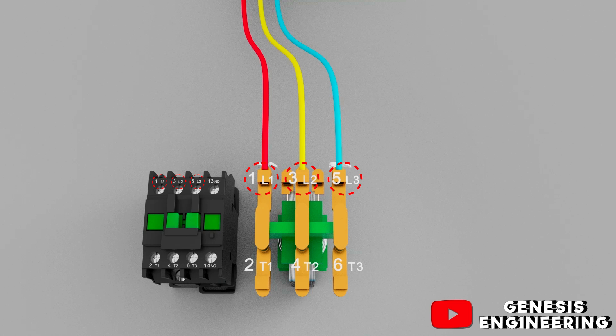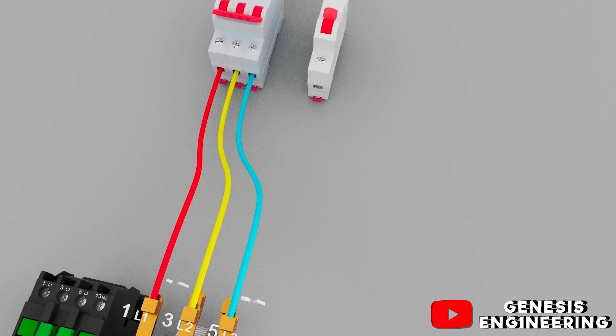That is, the energy input and the power contacts T1, T2, and T3 or 2, 4 and 6 where the load is connected, that is, the power output to turn on the motor.